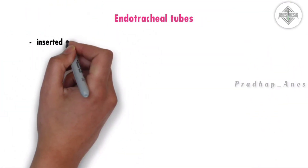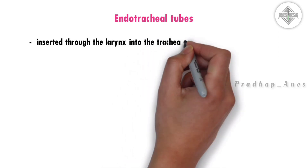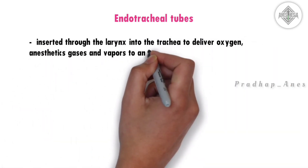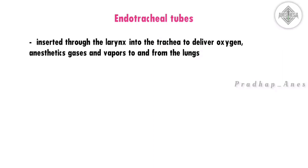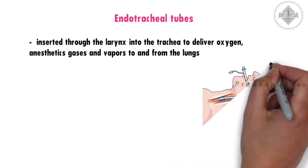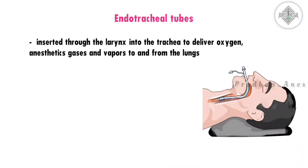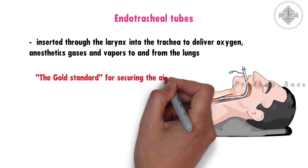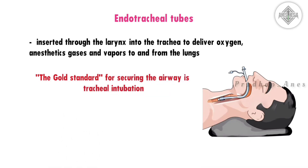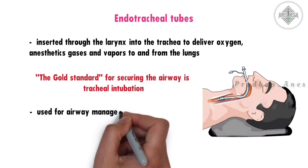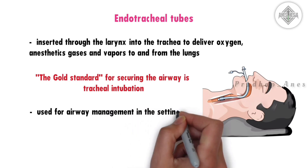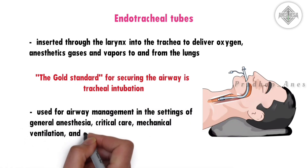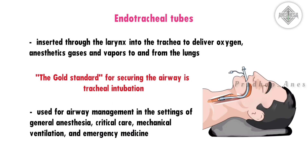Endotracheal tubes. The endotracheal tube is a device that is inserted through the larynx into the trachea to deliver oxygen, anesthetic gases, and vapors to and from the lungs. It is often stated that the gold standard for securing the airway is tracheal intubation. These tubes are commonly used for airway management in the settings of general anesthesia, critical care, mechanical ventilation, and emergency medicine.